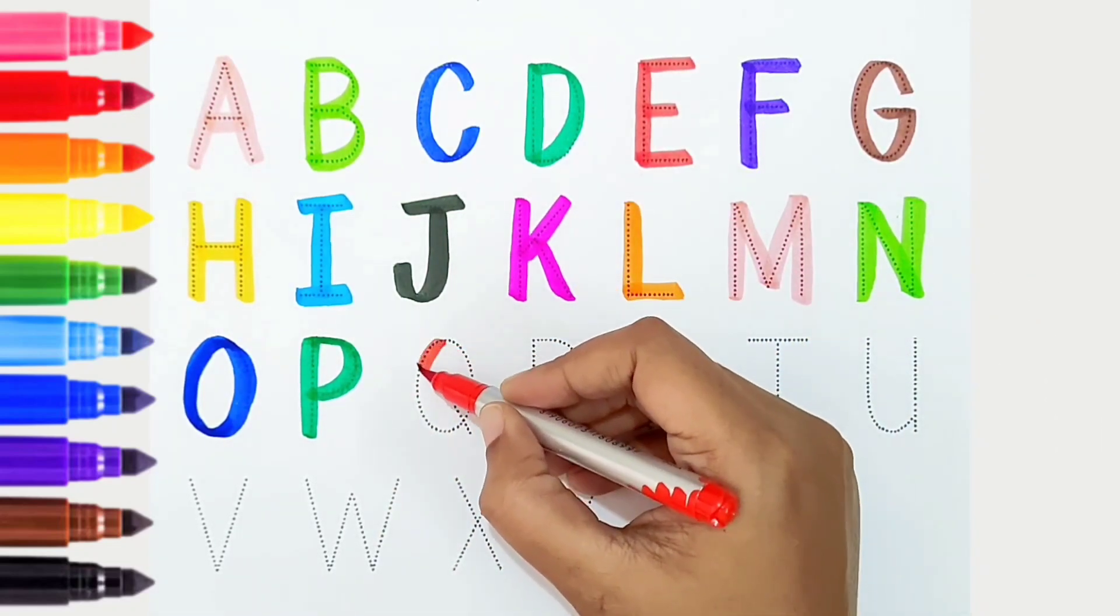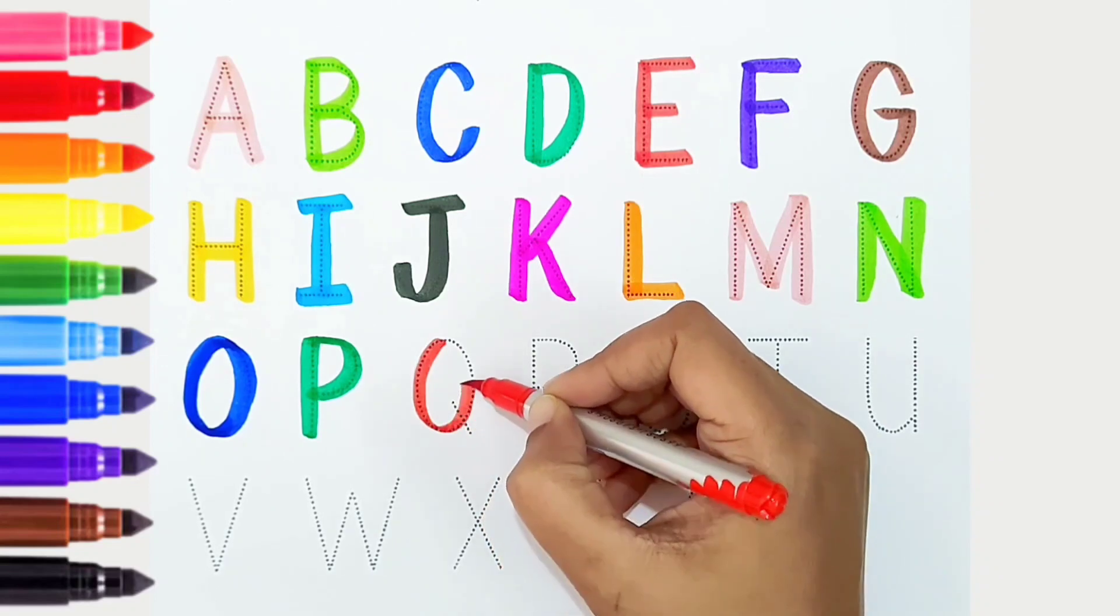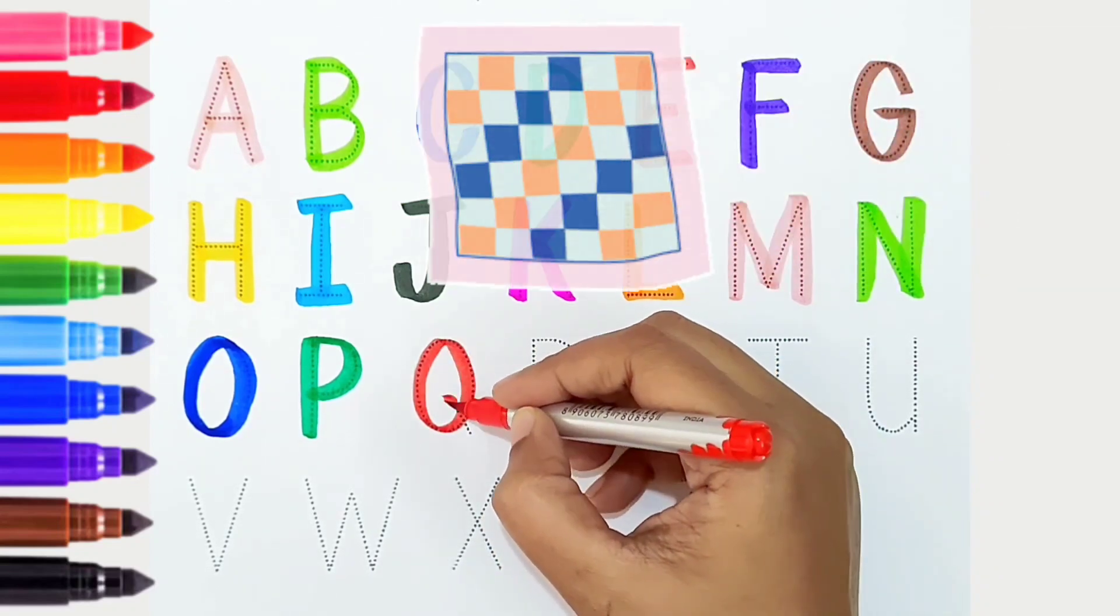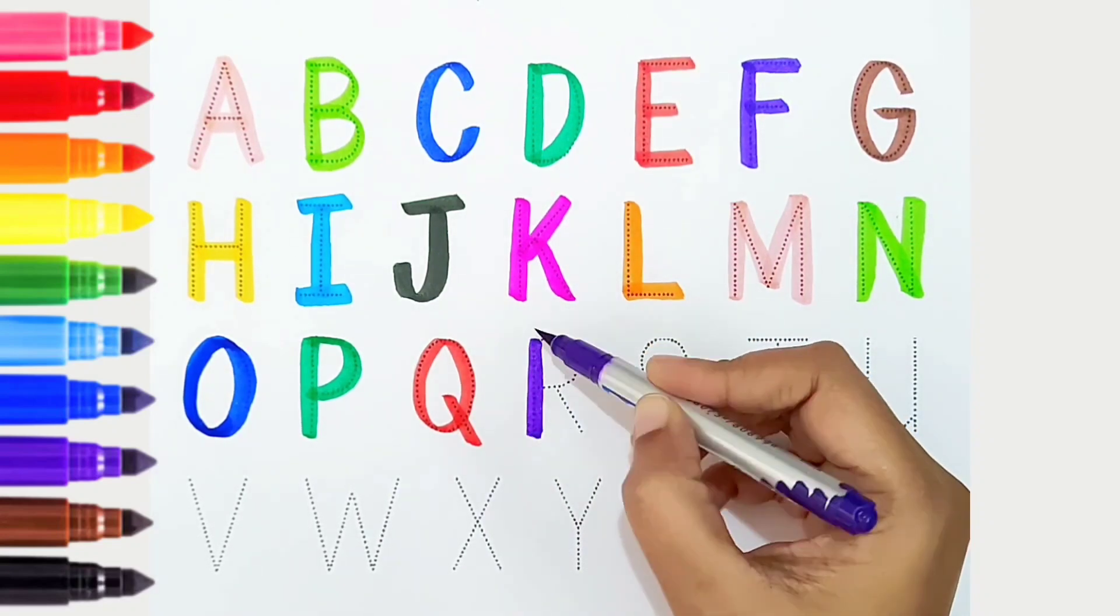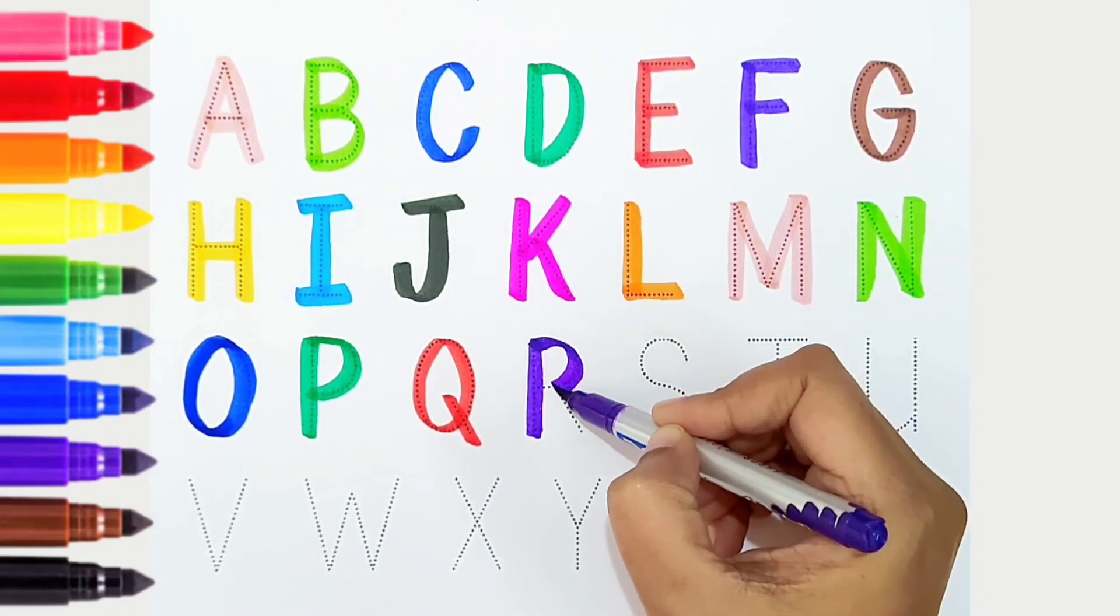Q, red color, is for quilt. R, violet color, is for rabbit.